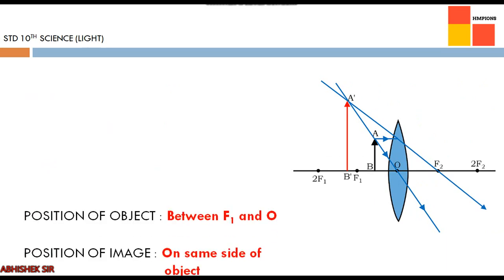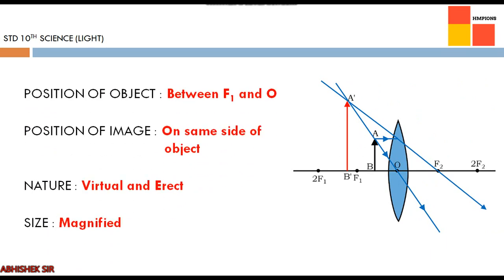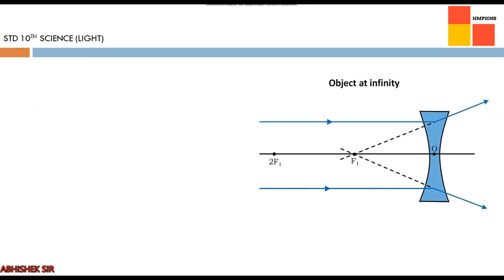Sixth case — object between f1 and optical center O: the image is formed on the same side as the object. It is virtual and erect, and comparing the red and black lines in the figure, the image is magnified — larger than the object.